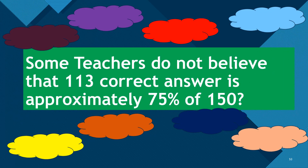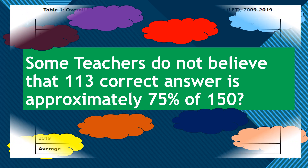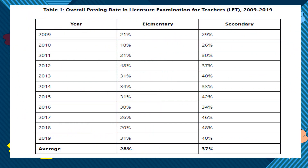Some teachers do not believe that 113 correct answers are needed to get approximately 75% on a 150-item exam. Bear in mind that the percent values here are percentages and not raw scores. A 75% passing score is very high. This means that in order to pass the licensure examination for professional teachers, do not settle for less. Before taking the examination, please prepare thoroughly. As proof, I will present the overall passing rate in the licensure examination for teachers, gathering data from 2009 to 2019.